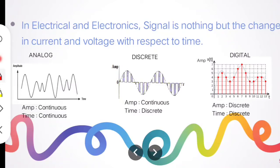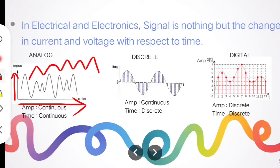The example for an analog signal is a video signal or an audio signal. As we know, the video or audio signal is a continuous one, which means at all instances of time we can receive the amplitude values. That is why, as shown in the diagram, the amplitude is continuous and the time is also continuous. This is the case for analog signals.